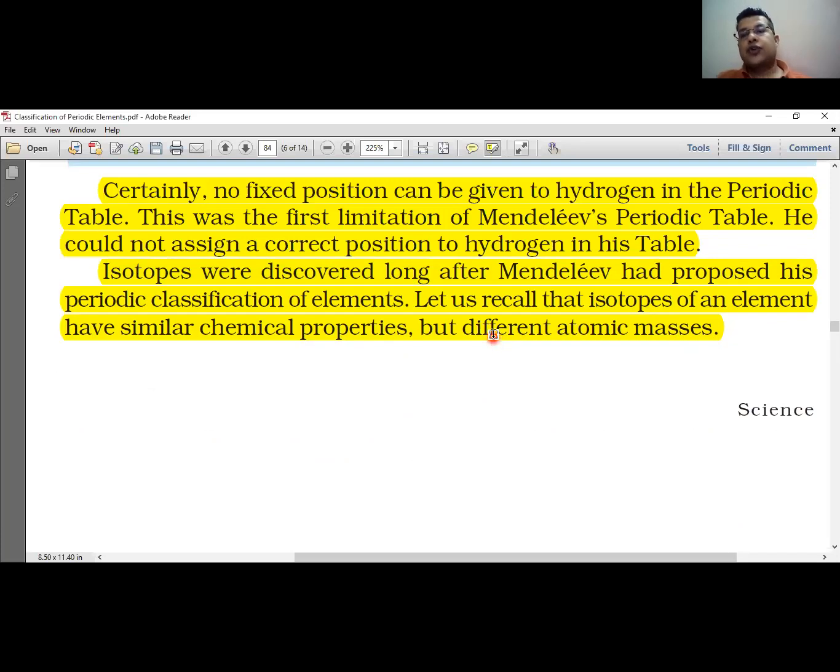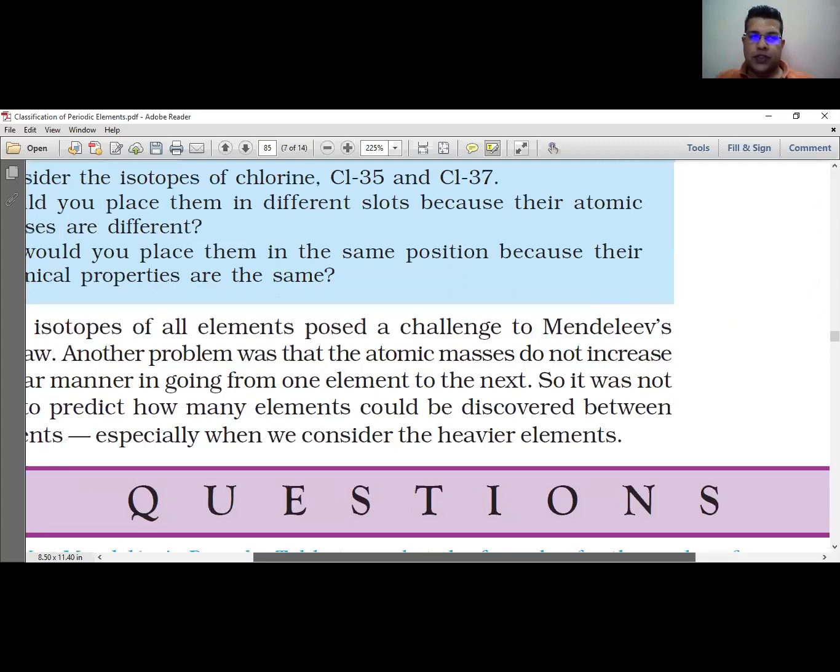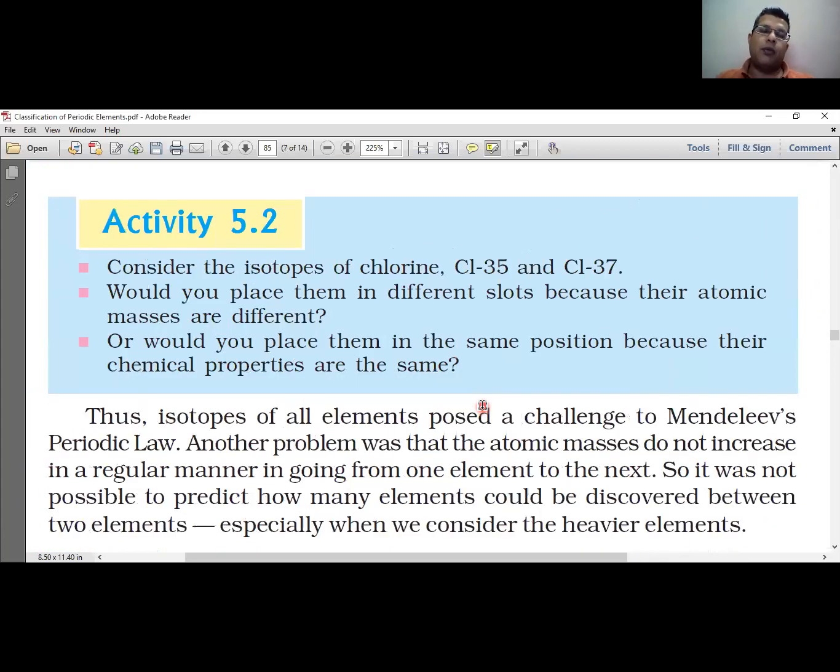Isotopes have the same chemical properties because the atomic number is the same. So isotopes discovered already created a problem for the periodic table. Consider the isotopes of chlorine, which has Cl-35 and Cl-37.